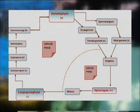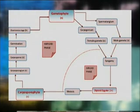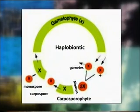Later, the terminal cells of this carposporophyte are transformed into sporangia called carposporangia, with each carposporangium producing a haploid carpospore which on liberation develops into the gametophytic plant. Thus, in the haplobiontic life cycle, the zygote is the only diploid phase which alternates with two haploid phases: the free-living gametophyte and the parasitic carposporophyte.